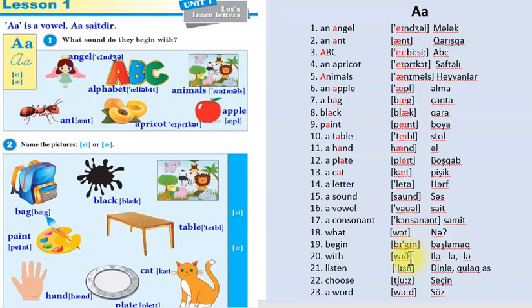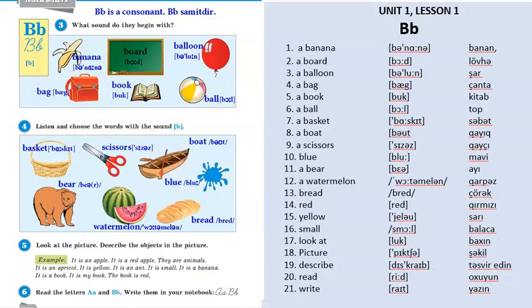Növbəti hərfimiz B hərfidir. Letter B. Letter B is a consonant, samit səsdir və bütün sözlərdə b kimi oxunur. Gəlin baxaq. What sound do they begin with? Banana - b, boat - b, balloon - b. It begins with b. Bag - b, book - b, bowl.